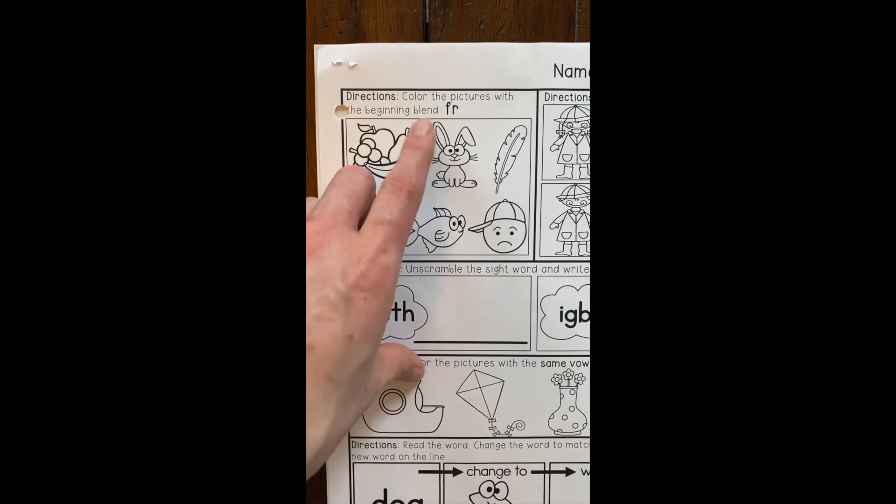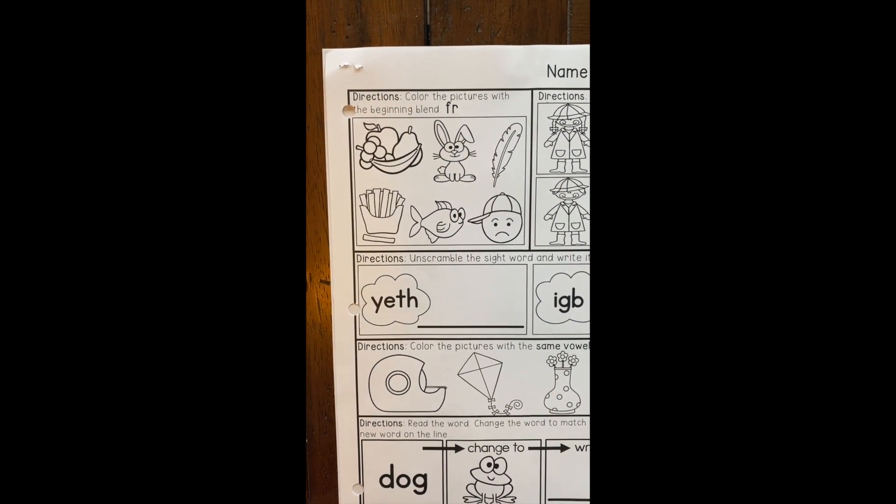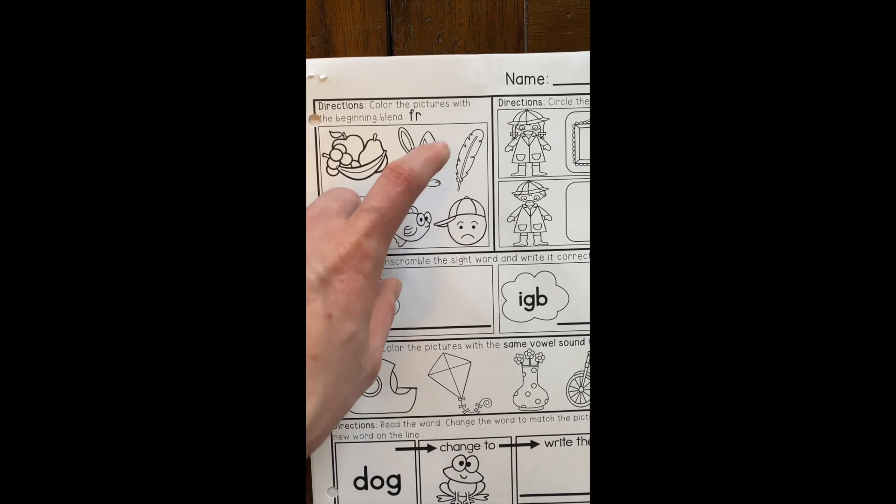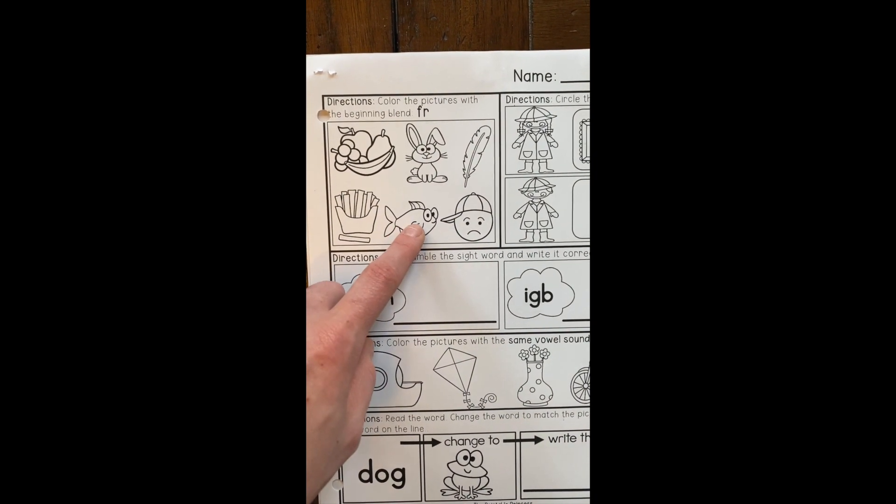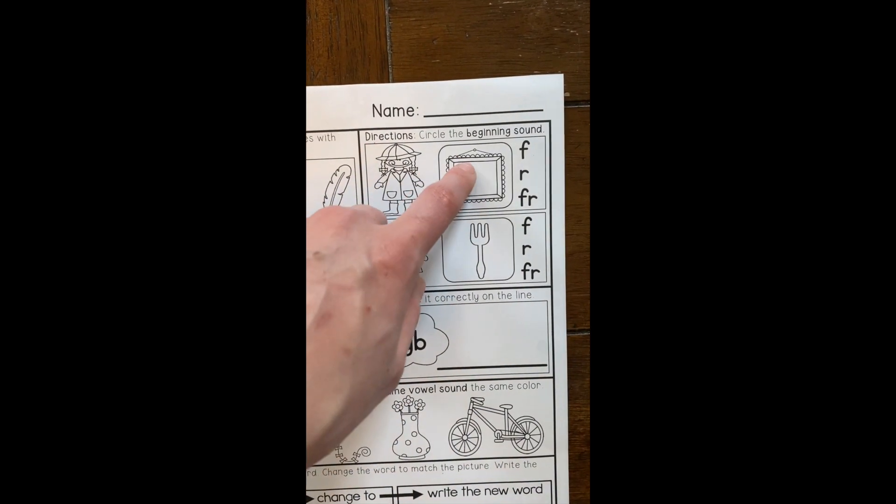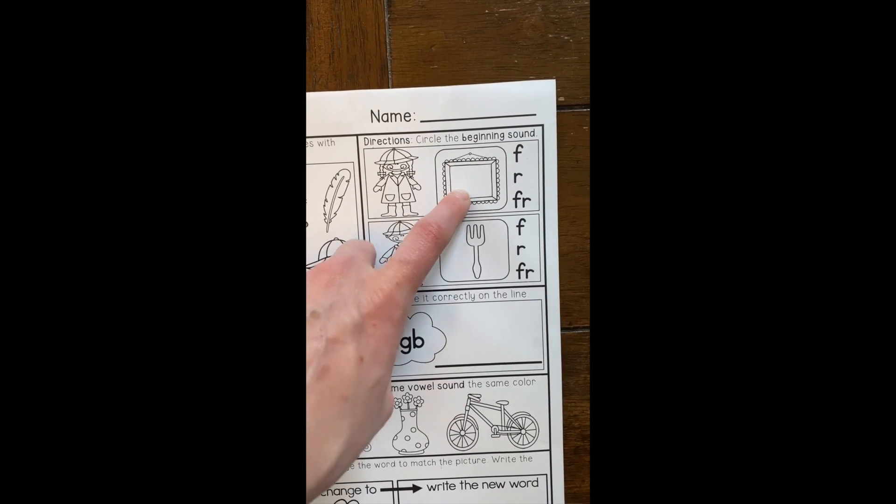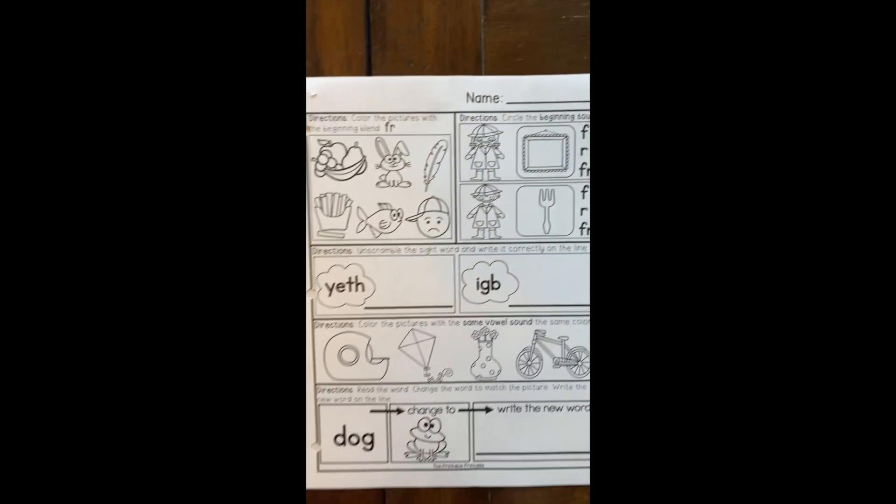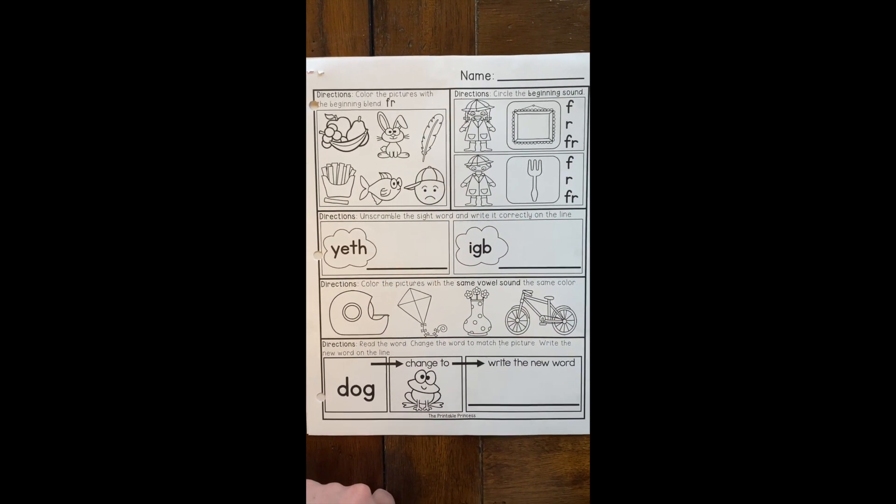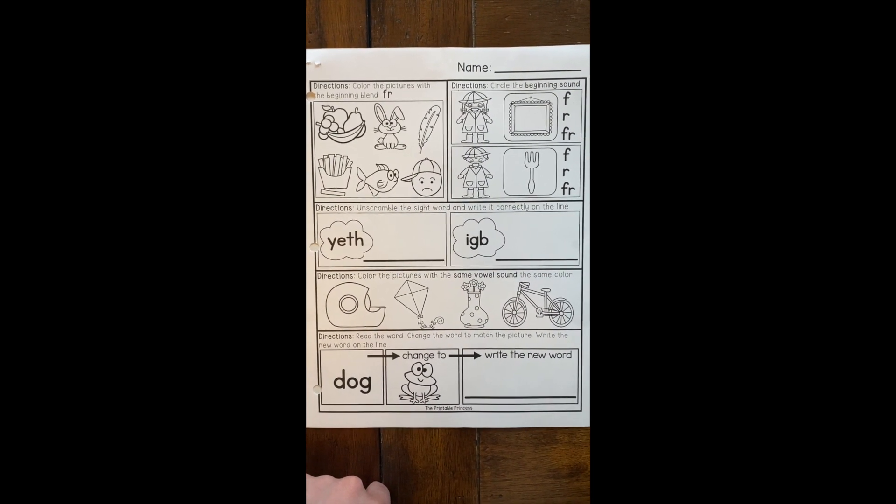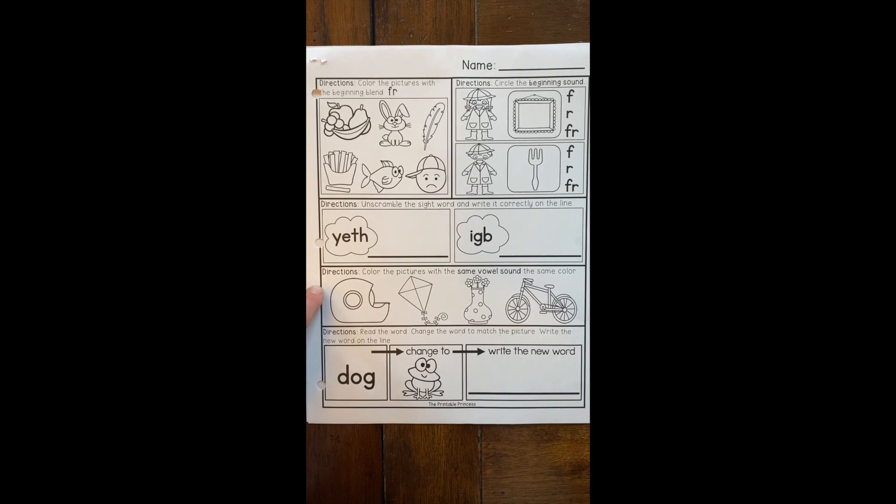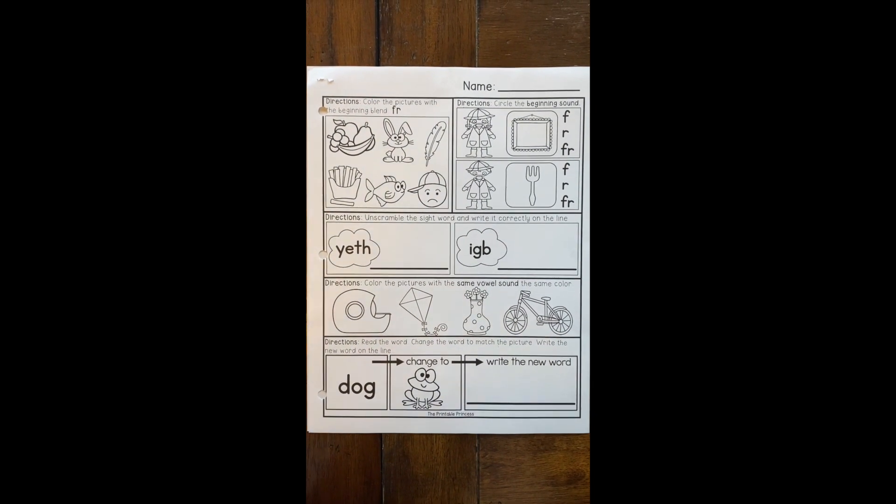On the back today, you're looking for words that begin with FR. And FR says 'fr'. We have fruit, rabbit, feather, fries, fish, and frown. Then over here, you're going to circle the beginning sound in our word frame and our word fork. You have the sight word 'they' and the sight word 'big' today. So unscramble those letters to write your sight words correctly.